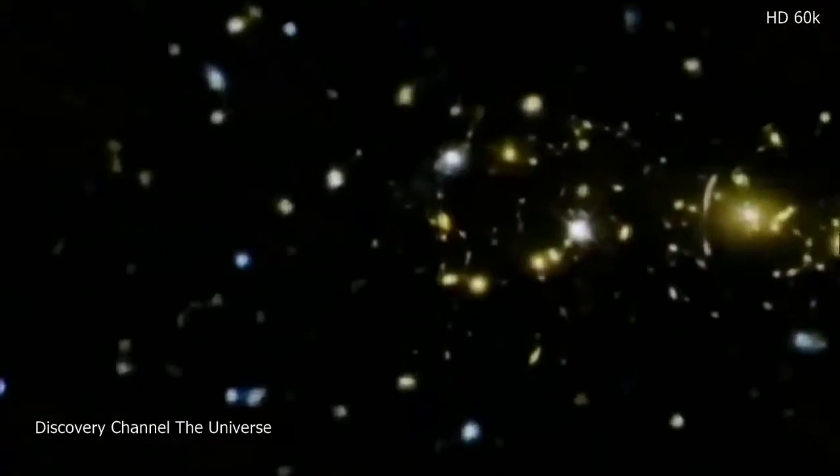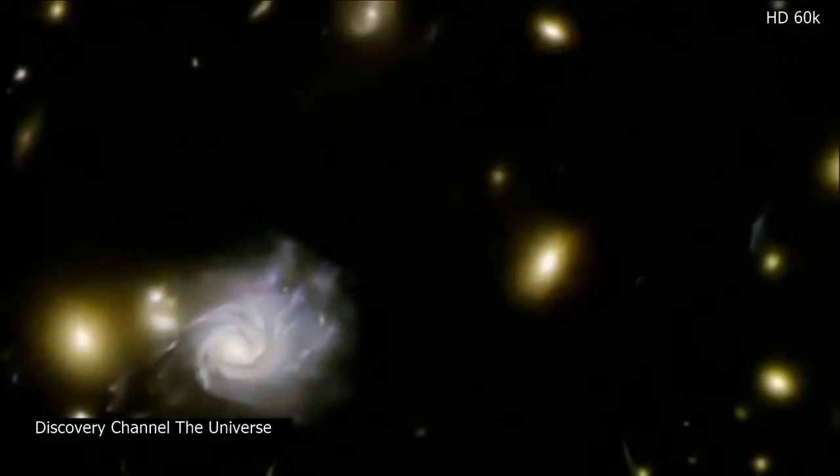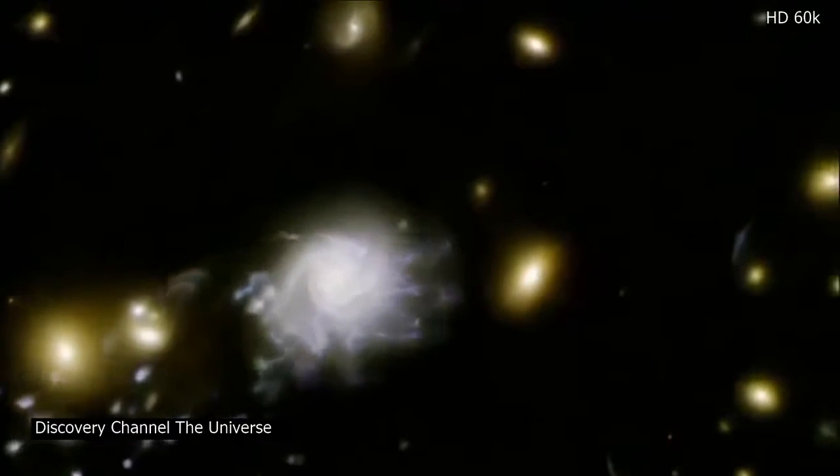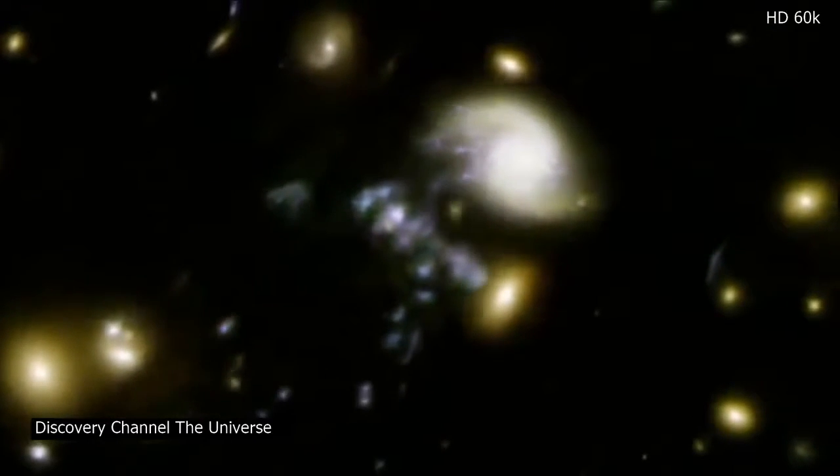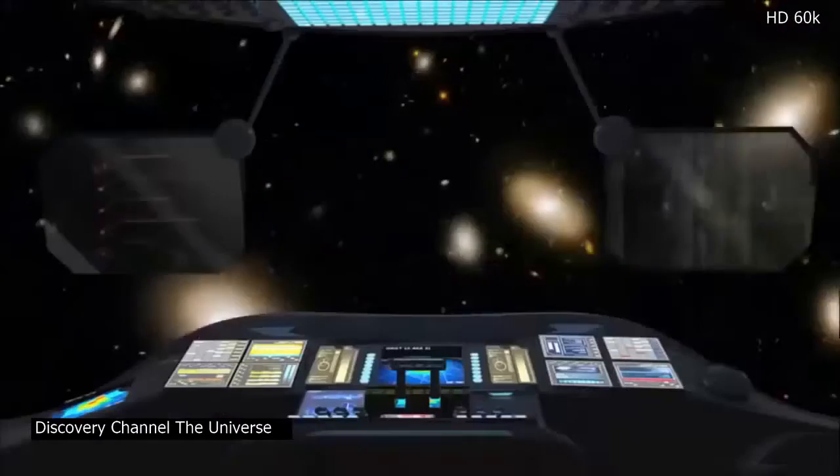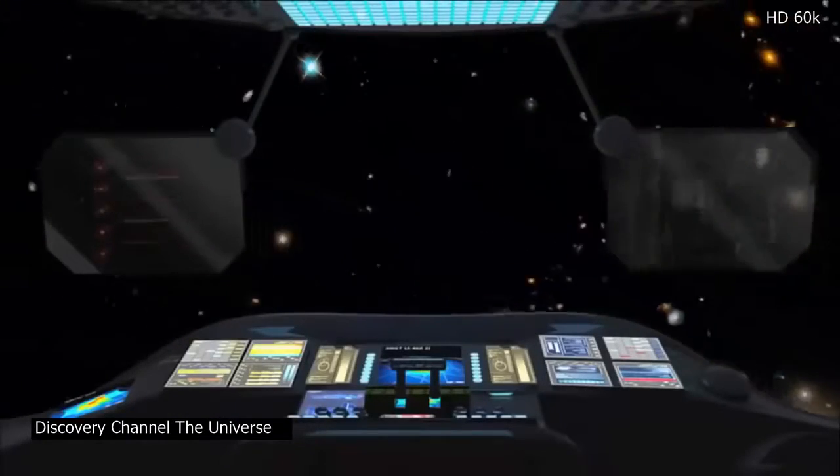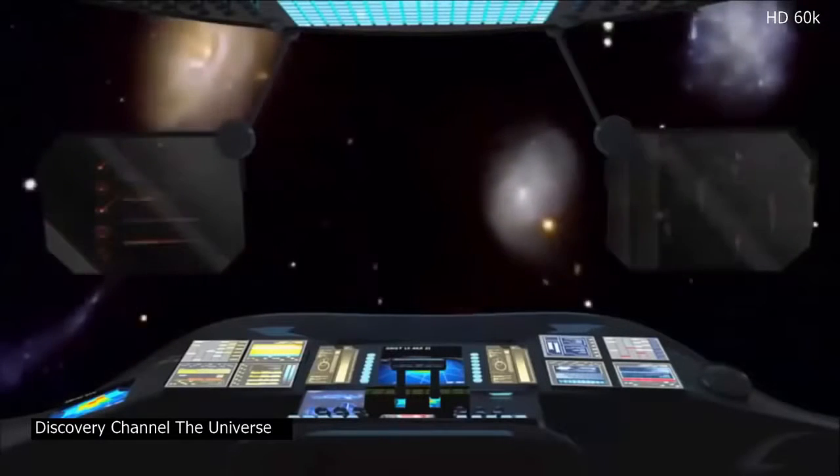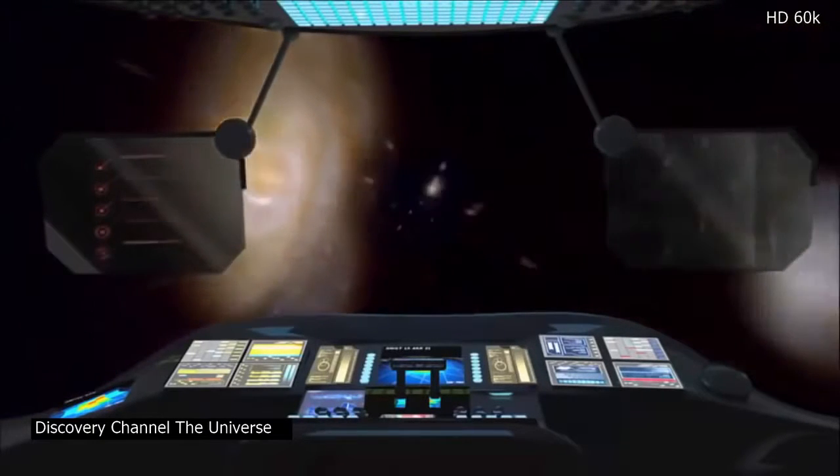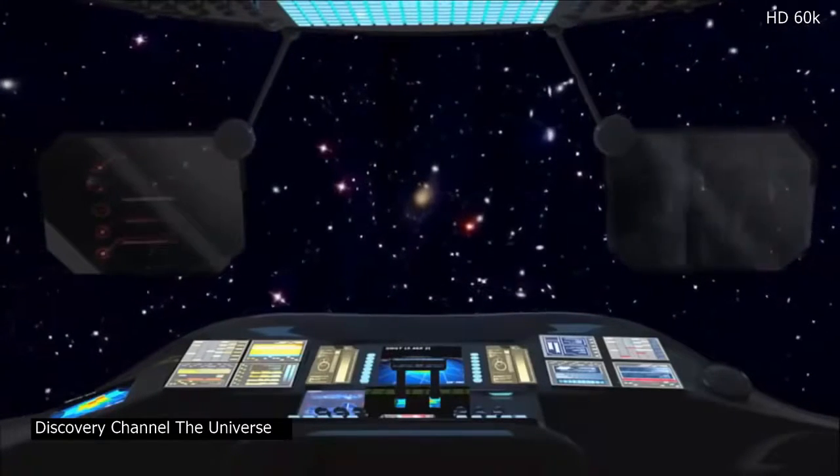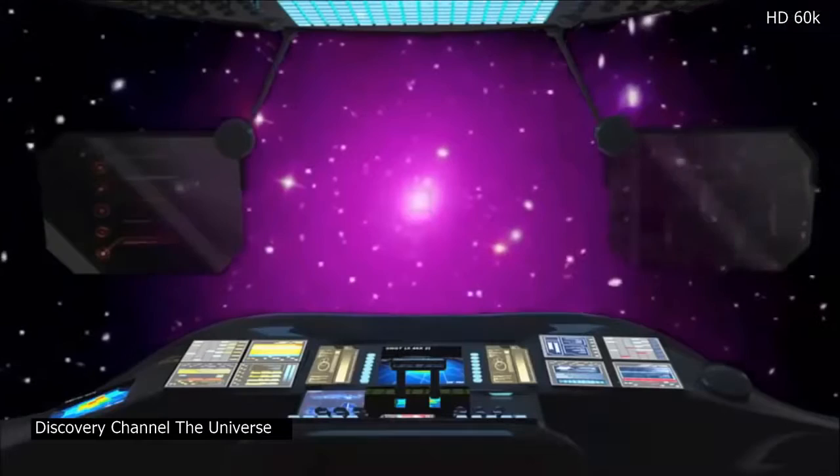And once a galaxy travels deep inside the cluster, it faces trouble from what's called ram pressure stripping as it speeds through the thin gas floating in the cluster space. When zooming through that gas, the pressure of the gas can actually strip gas away from the galaxy itself, leaving it relatively gas-free and unable to form many new star clusters. If we flew through the cluster looking for the intergalactic gas, we wouldn't see it. It is so very thin that on Earth we'd consider it a perfect vacuum. But if we turn on our spaceship's X-ray detectors, it would show up as a massive, eerie glow.